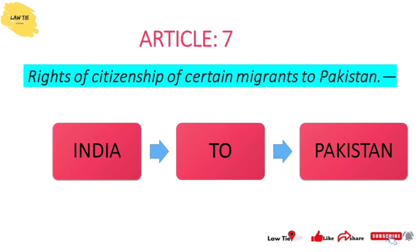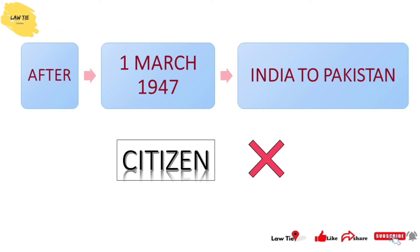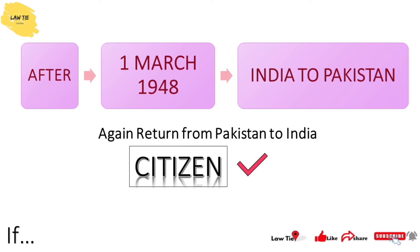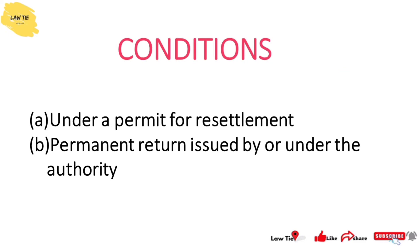Article 7 deals with the rights of citizenship of certain migrants to Pakistan. People who migrated from India to Pakistan after 1st March 1947 will not be citizens of India. Article 7 also overrides Articles 5 and 6 — if a person is deemed a citizen of Pakistan under those articles, they will not be a citizen of India. However, if someone migrated to Pakistan and then returned to India with a permit for resettlement or permanent return issued by a lawful authority, they may qualify for Indian citizenship.